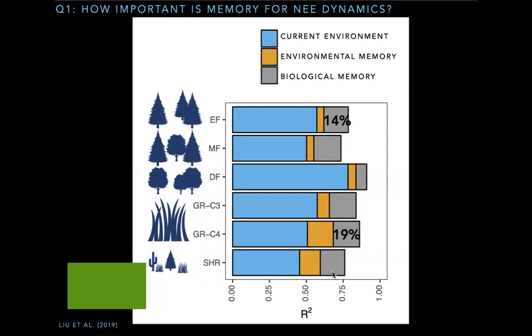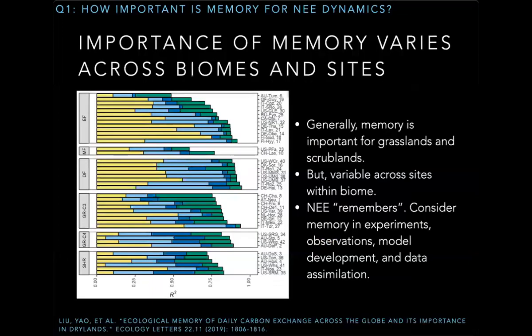Unlike environmental memory, biological memory is much more similar across biomes. Taken together, memory effects — both environmental and biological — are clearly important for grasslands and wetlands, and perhaps not so much for, for example, deciduous forests in this particular dataset. For a more detailed breakdown of the memory effects not only for overall biomes but for each site, I encourage you to check out my paper. Although generally memory is more important for grasslands and wetlands, there's lots of variation across sites.